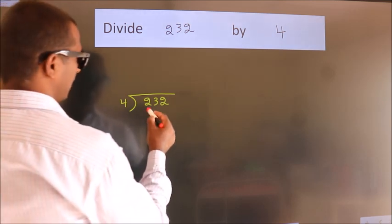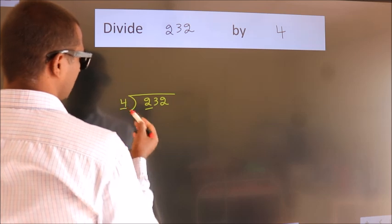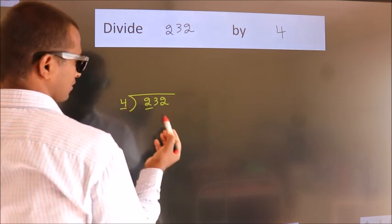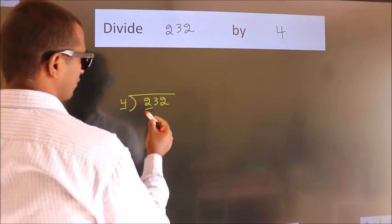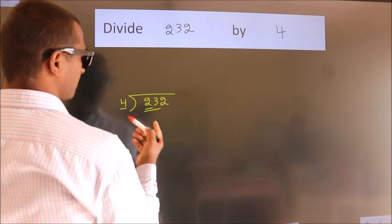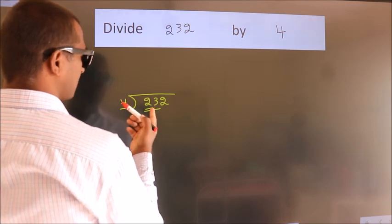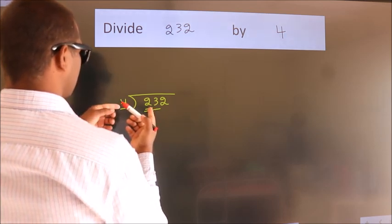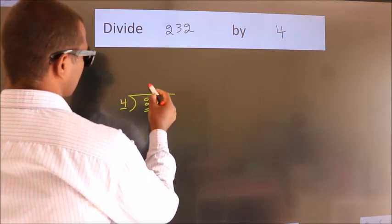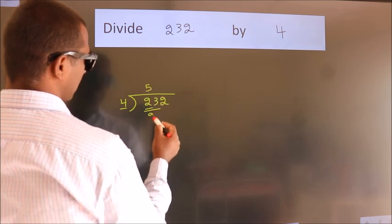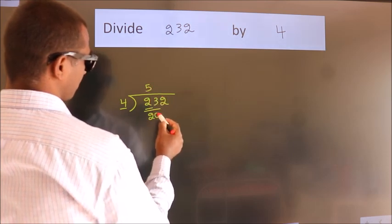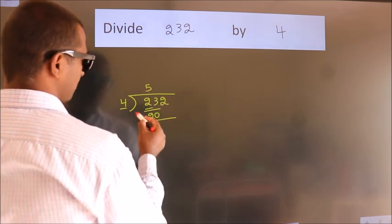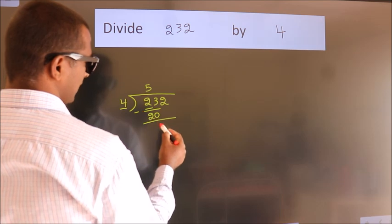Here we have 2, and here 4. 2 is smaller than 4, so we should take 2 numbers: 23. A number close to 23 in the 4 times table is 4 fives 20. Now we should subtract. We get 3.